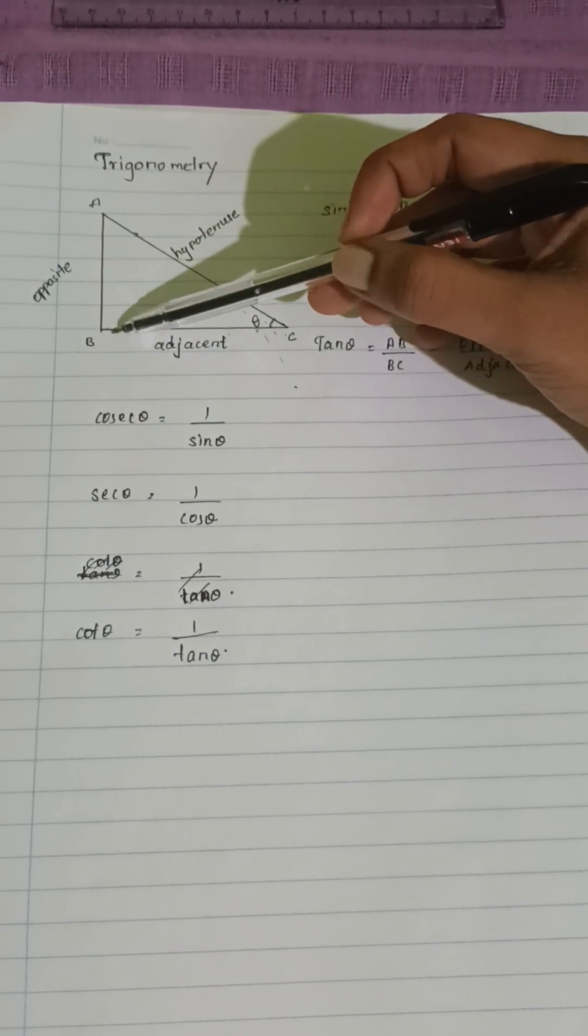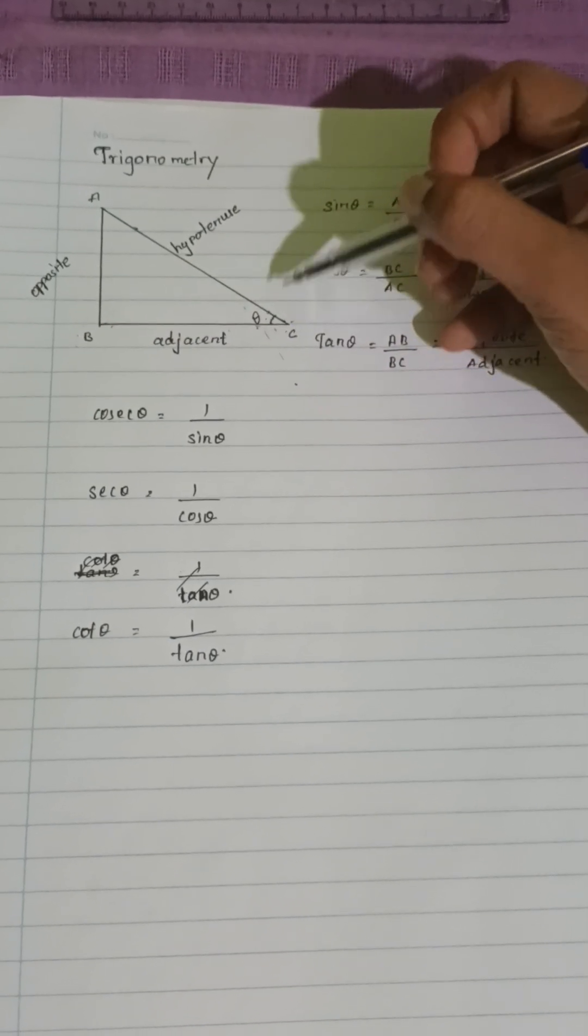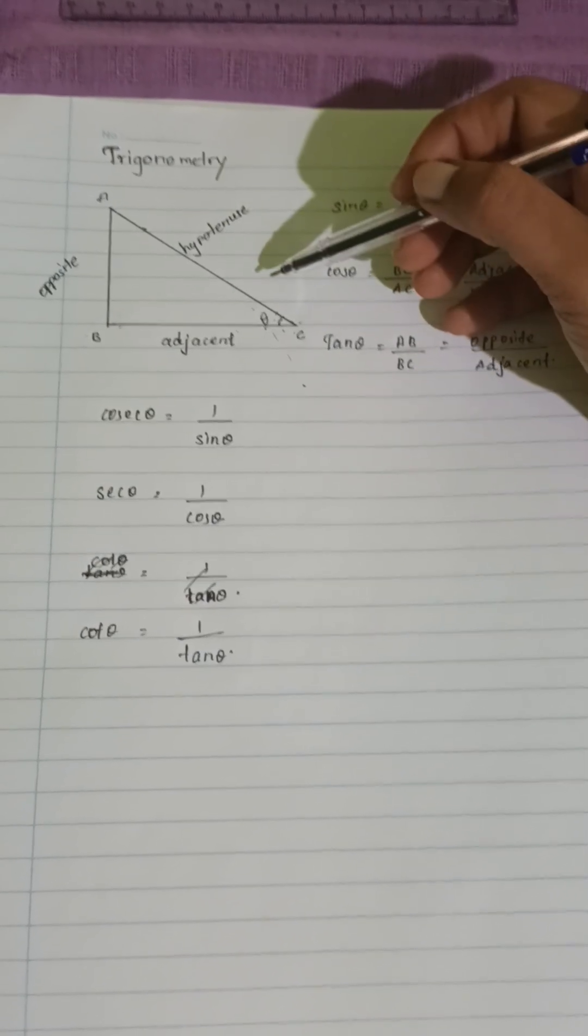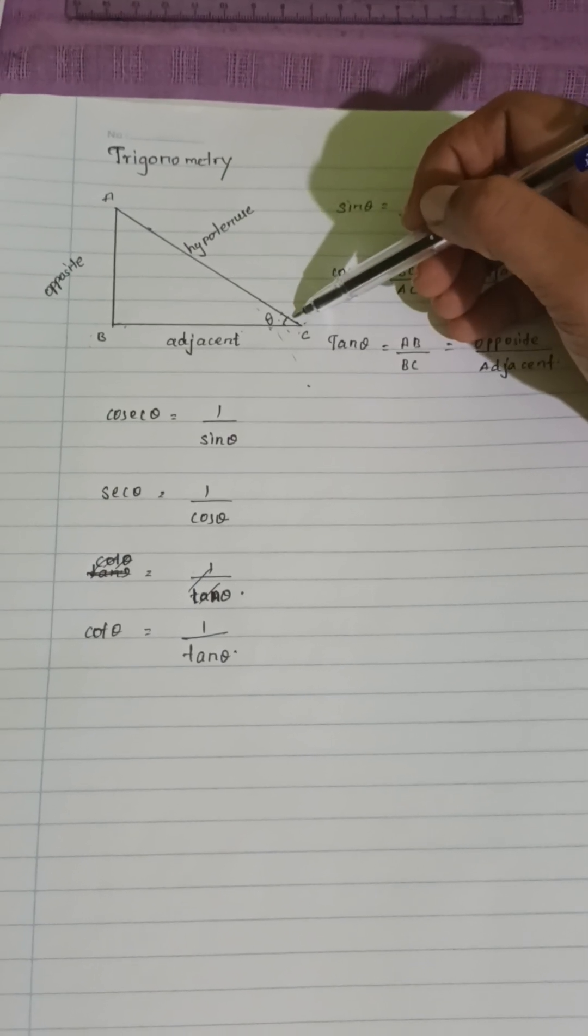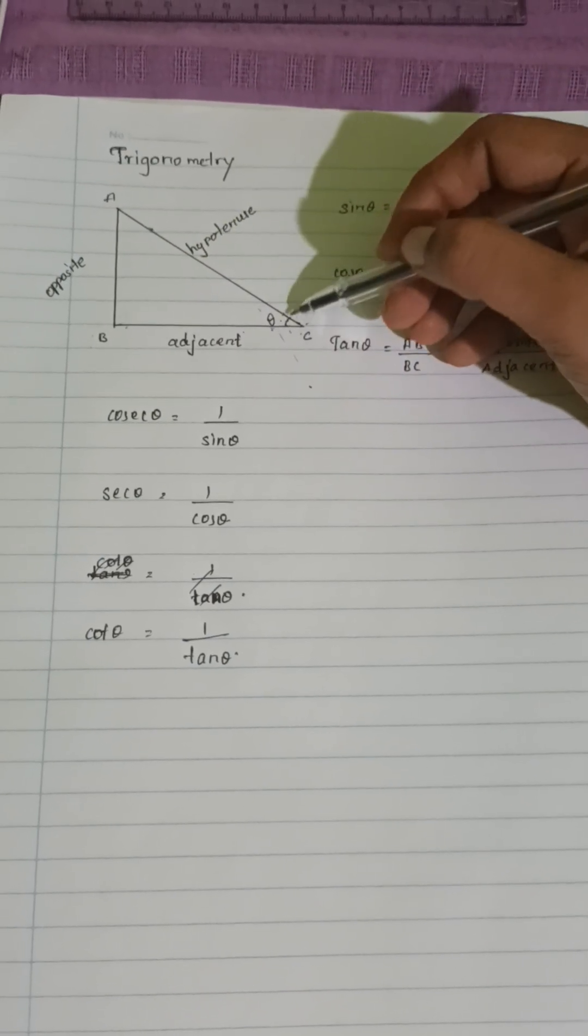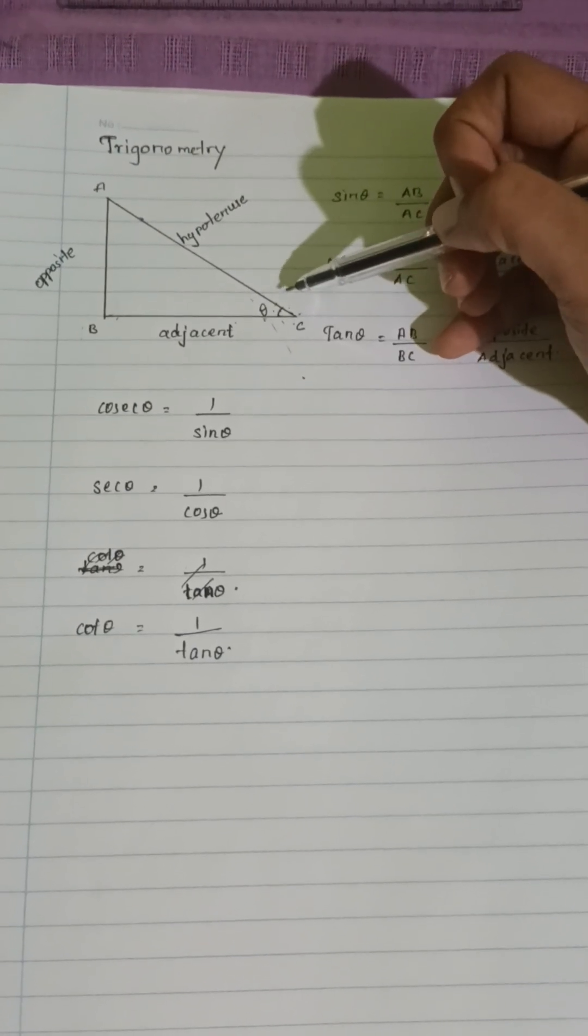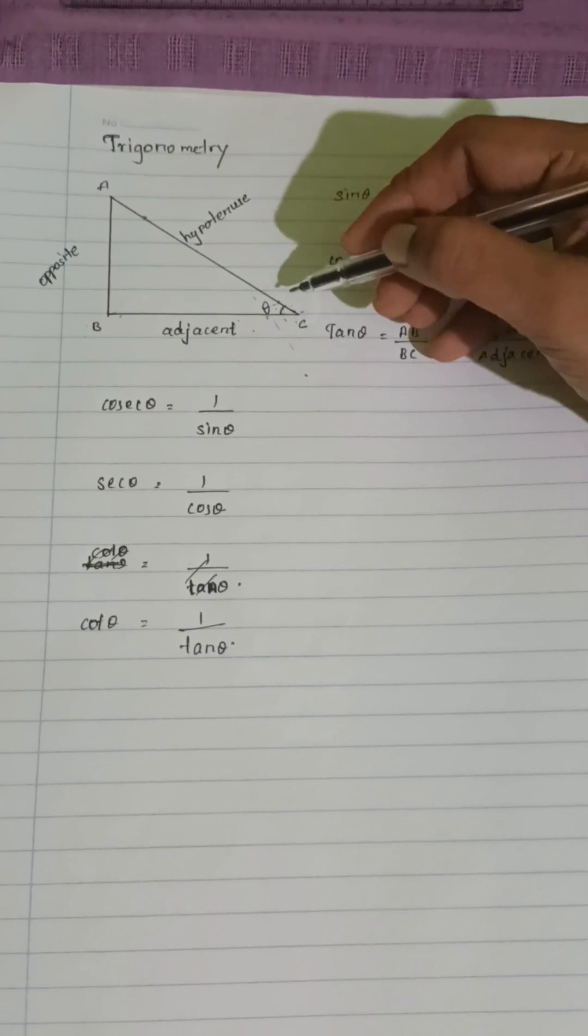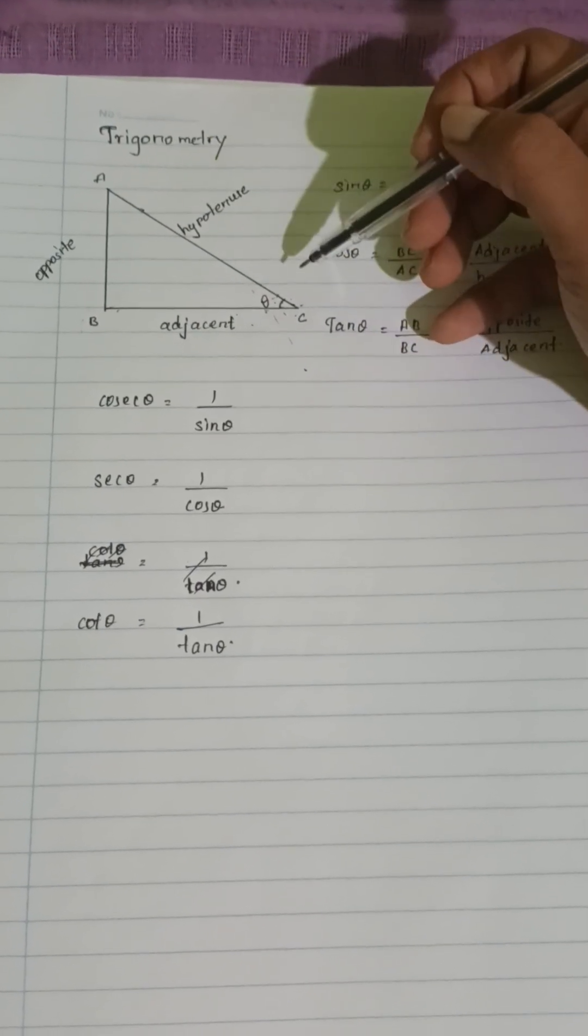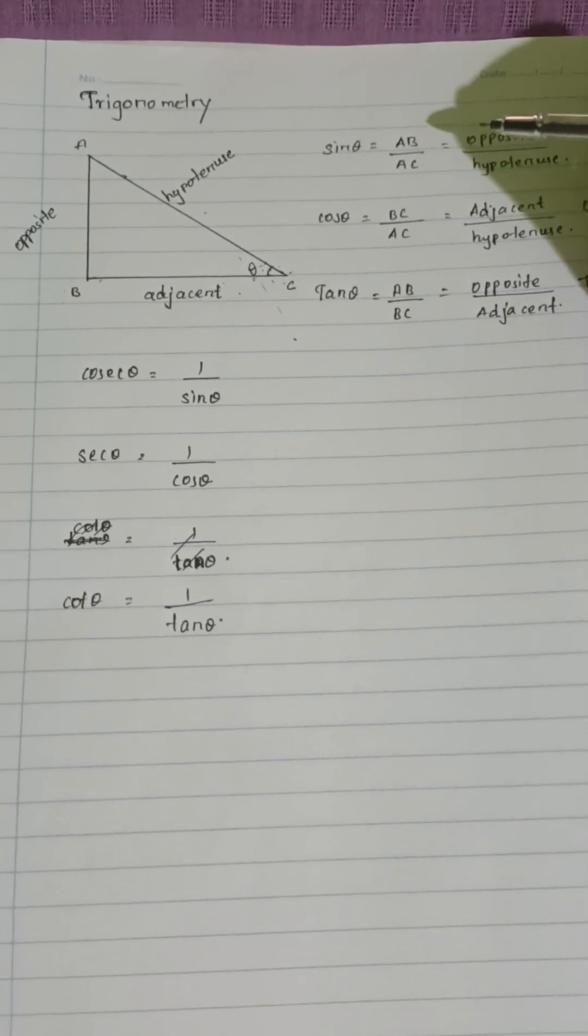Each side of the triangle is labeled based on its position relative to angle theta. AB is the opposite side across from angle theta, BC is the adjacent side next to angle theta, and AC is the hypotenuse - the longest side across from the right angle.